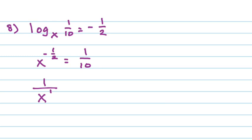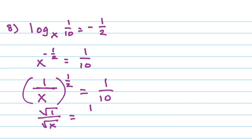Look at something like number 8. Looks really bad. Log base x, 1 tenth, equals negative 1 half. So that means we're taking x to the negative 1 half, has to equal 1 over 10. So just think about what that means. The negative exponent really means that it should be 1 over x. So that means that we're taking the square root of these. So it says the square root of 1 over the square root of x should equal 1 over 10.